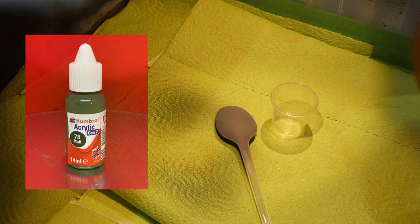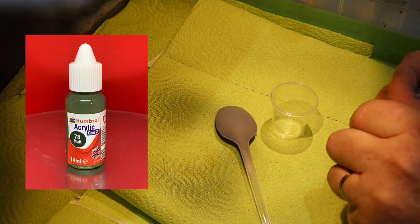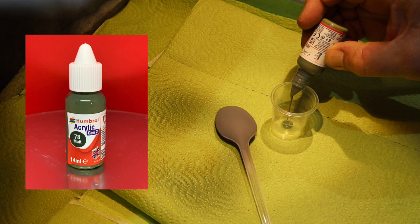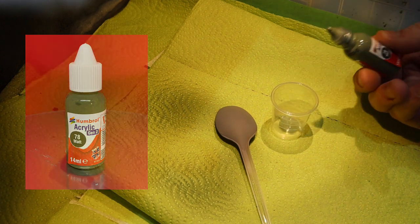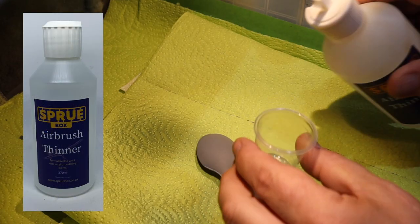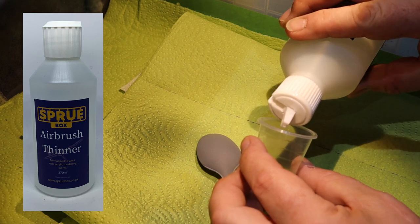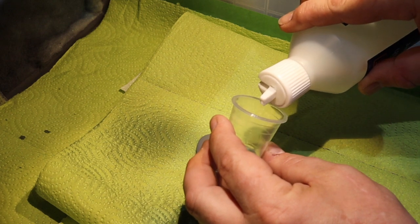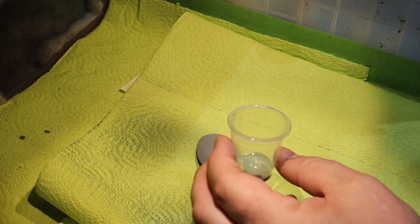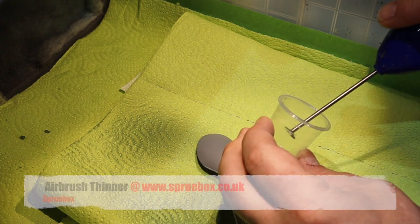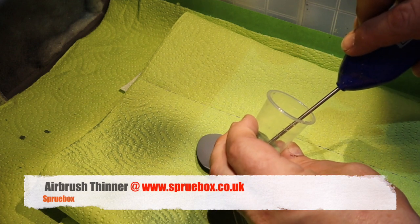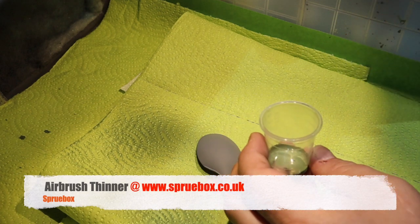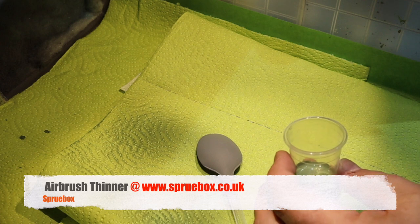So let the test begin. Our first candidate is 78 matte of the Gen 2 range. I'm going to be using an acrylic thinner from Spruebox. The reason for this is Humbrol are still in development with the thinner. They're having a little tinker and a play, but I use this particular thinner for all my acrylics and it works fine. So obviously going to give it a quick mix up, and then we're going to get it in the airbrush and give it a go.